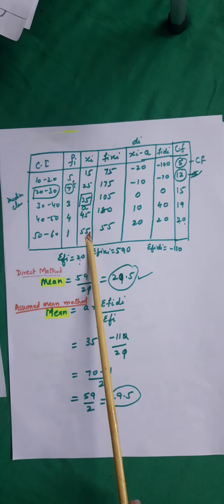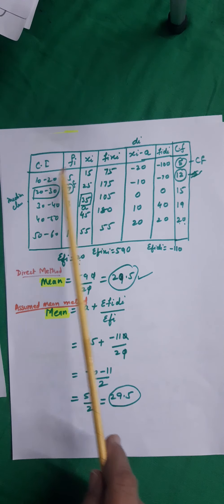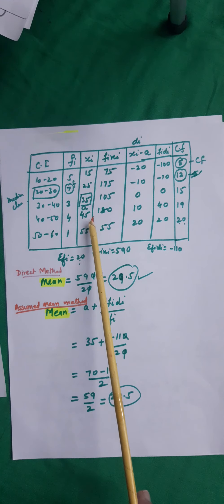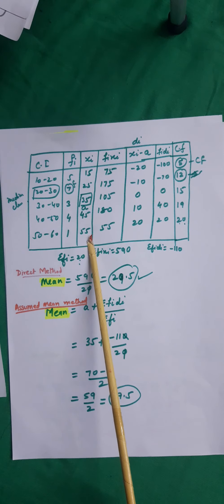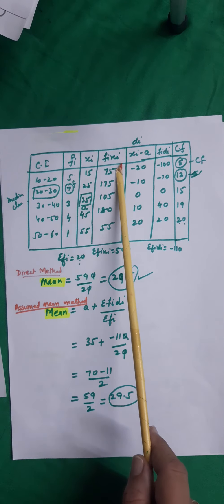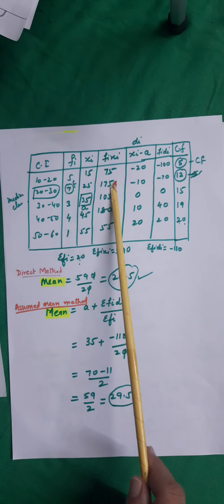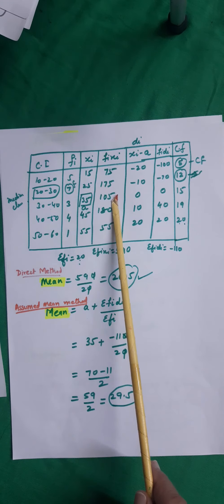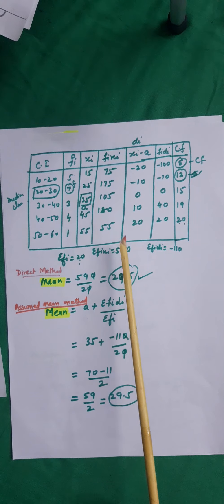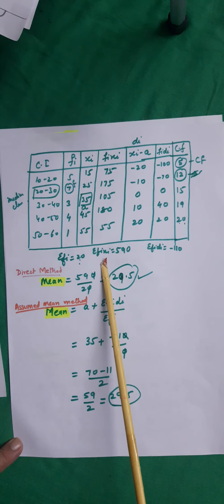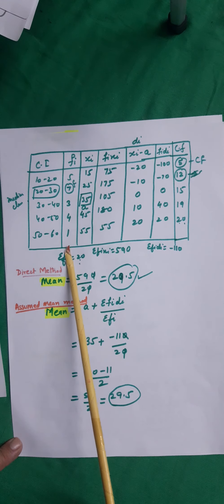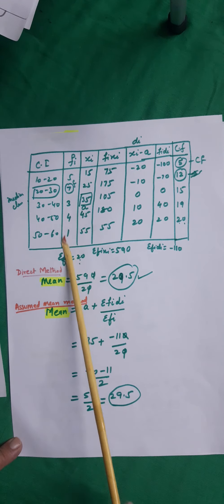The mid-values XI are: 15, 25, 35, 45, 55 (each obtained by adding class size 10). Computing FI·XI: 5×15=75, 7×25=175, 3×35=105, 4×45=180, 1×55=55. Sigma(FI·XI) equals 590, and sigma(FI) equals 20. So mean equals 590 upon 20, which is 29.5.